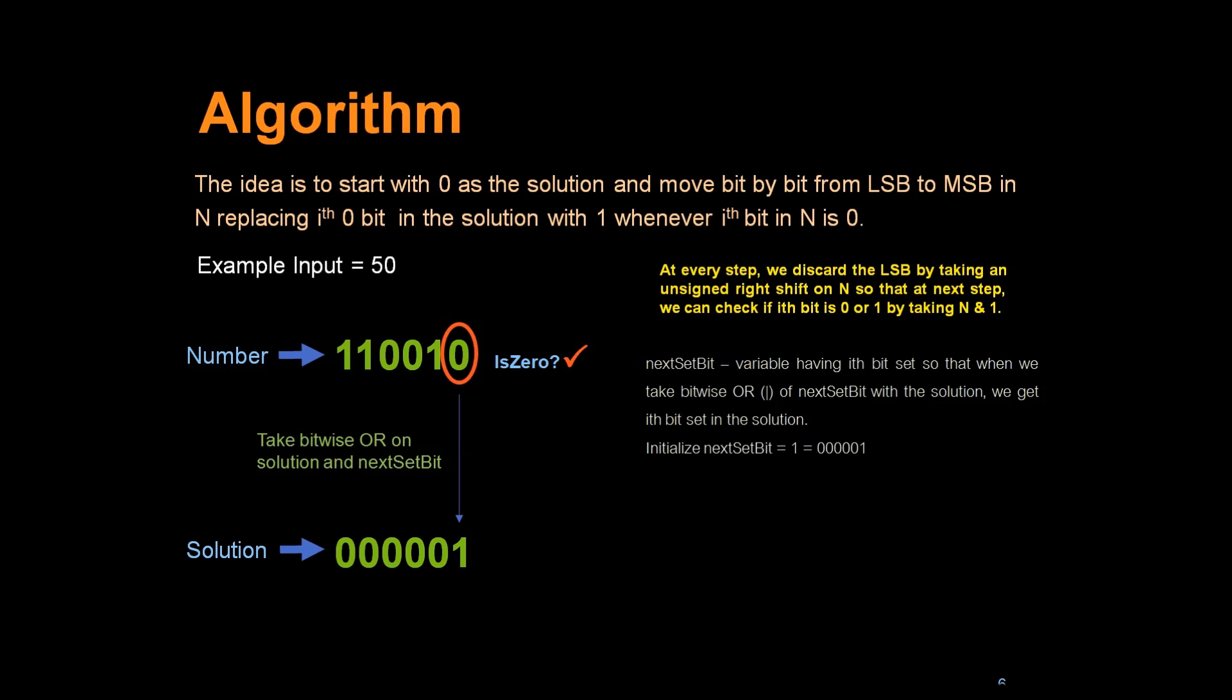We can clearly see that next set bit is 000001. And if we do OR of this with all zeros, we will get 000001. So once we are done, we will left shift next set bit to move 1 bit to left. So next set bit becomes 000010.